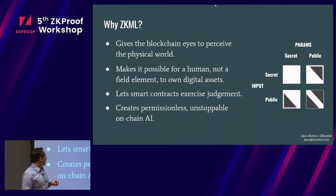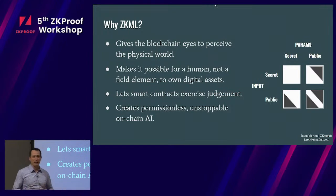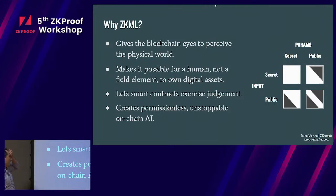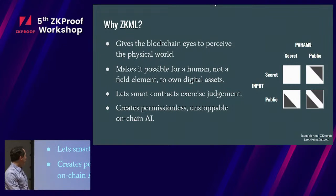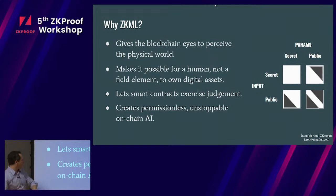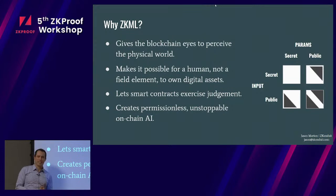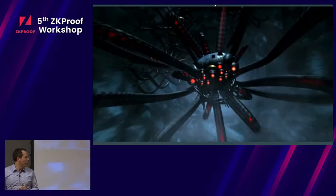This lets us make smart contracts that can deal with fuzzy situations and exercise judgment — for example, in legal situations, deciding if a news story says something, deciding if a DAO contributor has done what they said they were going to do. And the really big-picture thing is that it enables us to create an unstoppable, permissionless on-chain AI that nobody can turn off. What could possibly go wrong, right?